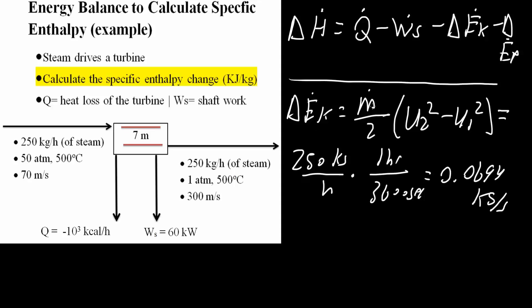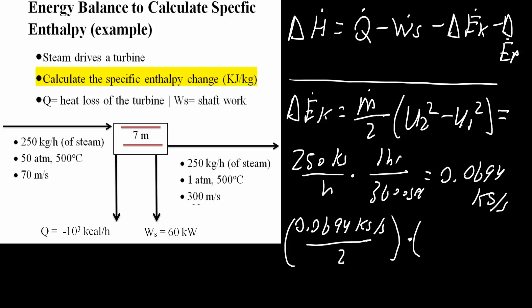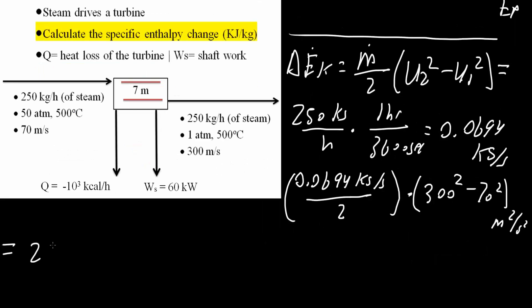Now we will apply this into our formula. We have 0.0694 kilograms per second divided by 2, and we multiply this by the change in velocity. On the product side we have 300 meters per second, and on the input side we have 70 meters per second. So we say 300 squared minus 70 squared, and the units for this are meters squared per second squared, because we're squaring both the 300 and the units. This equals 2,953 kilograms times meters squared divided by second cubed.